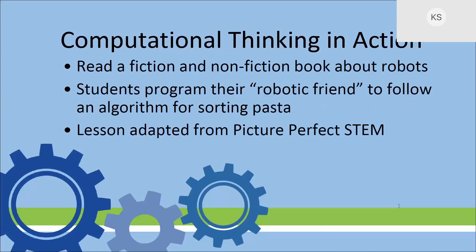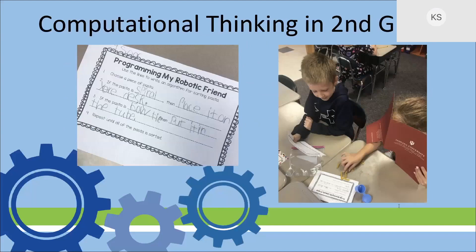I focused primarily on K to five. I've been using Picture Perfect STEM, which comes with a thick manual and picture books — either ordered that way or you find the picture books on your own. One lesson I did in a second grade room paired a fiction picture book with a nonfiction picture book. Students had to program their robotic friend to follow an algorithm. One student had her eyes covered as the robotic arm, while another student read the algorithm he had written. Afterwards we talked about whether a robot could do this job more efficiently, then watched a video of a robotic arm sorting chocolates.